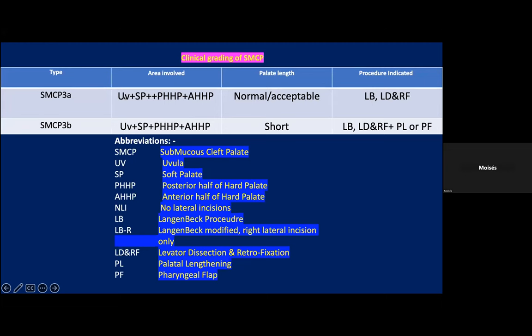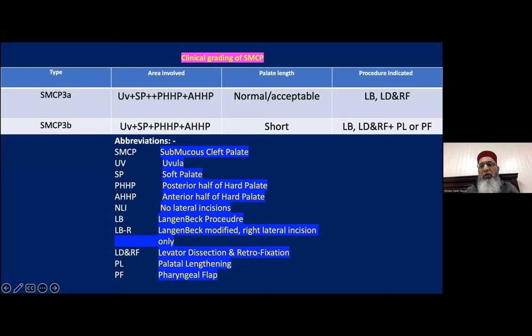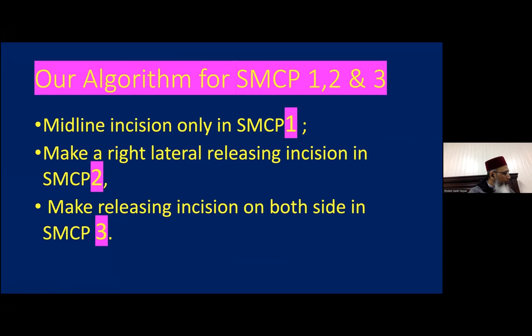Type 3 involves the uvula, soft palate, posterior half and anterior half of the hard palate. If palate length is normal (3A), we do VWK with levator dissection and retrofixation. If palate is short (3B), we add palatal lengthening or pharyngeal flap depending on the patient's age. Our algorithm in summary: midline incision only for type 1; right lateral incision for type 2; releasing incisions on both sides for type 3.